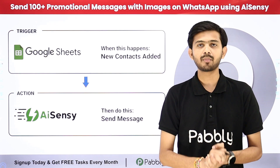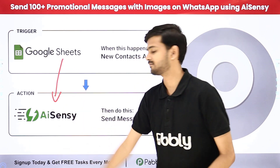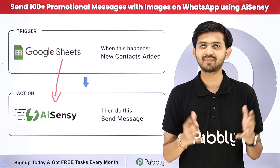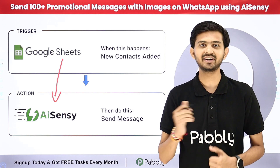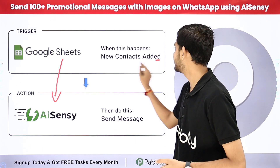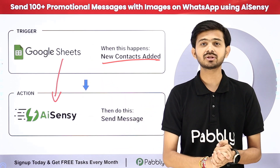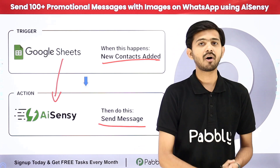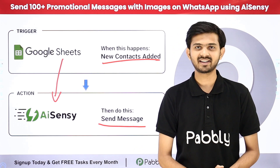To build a connection between Google Sheets and AI Sensi, I'm going to use Pabbly Connect, which is an amazing software for automation and integration. With Pabbly Connect, as new contacts are added in the Google Sheet, a promotional message will automatically be sent on WhatsApp using AI Sensi. Let me take you to my computer screen.